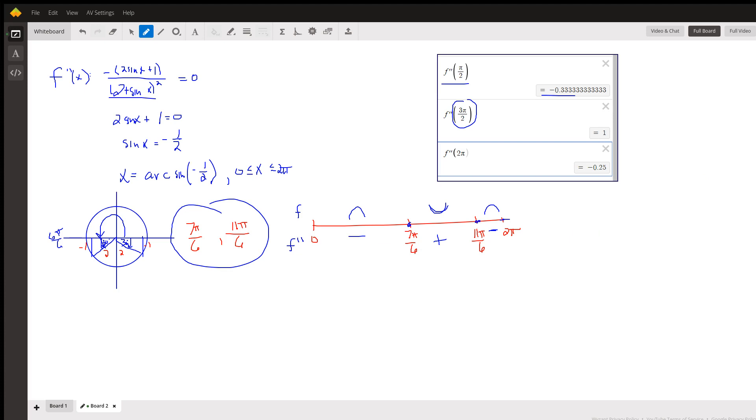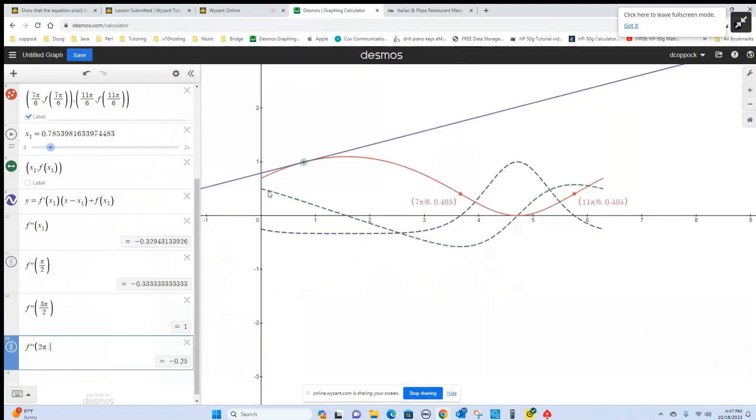And if I share my screen, go to Desmos, and move this tangent line. Right now, all the tangent lines are above the curve, above the function graph.